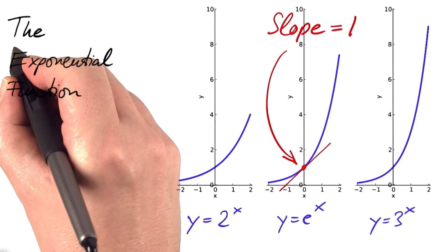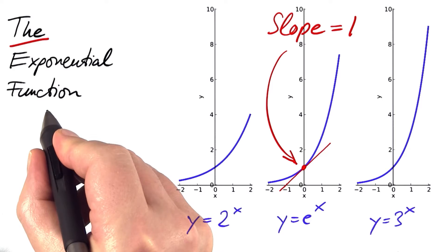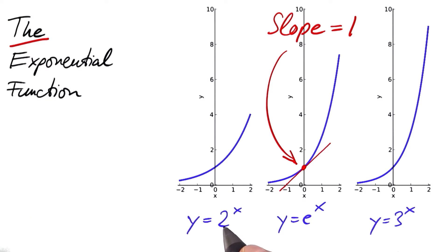This function is called the exponential function, whereas 2 to the power of x and 3 to the power of x are just exponential functions.